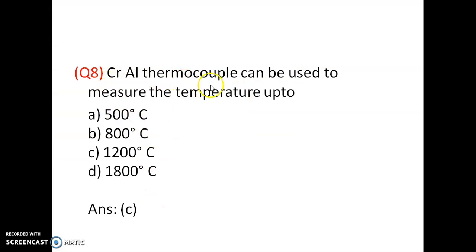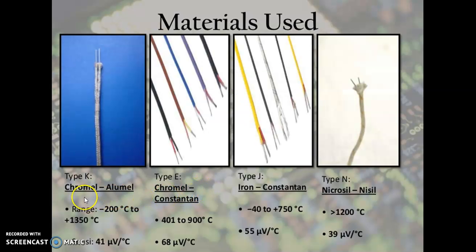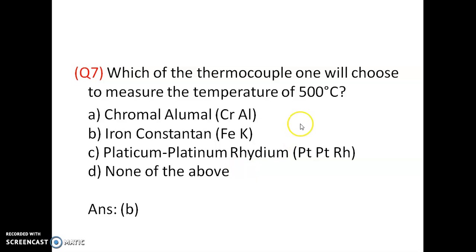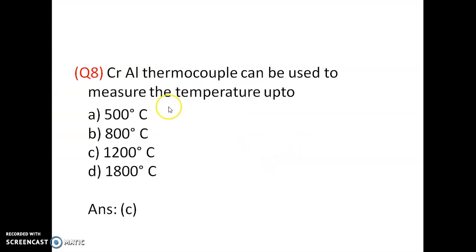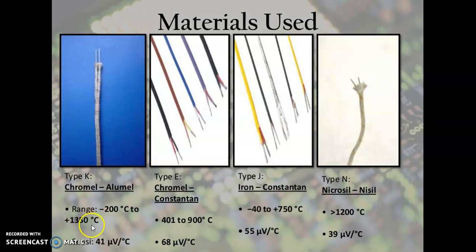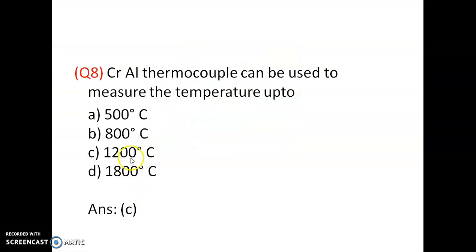Question 8: A Chromel-Alumel thermocouple (type K) can be used to measure temperature up to approximately 1200°C (technically 1350°C, but nearer to 1200°C for practical purposes). Option C is correct.